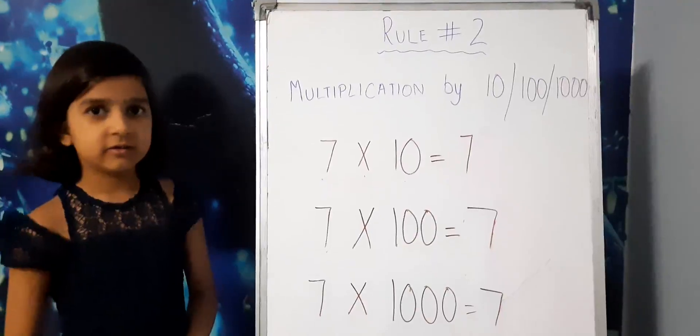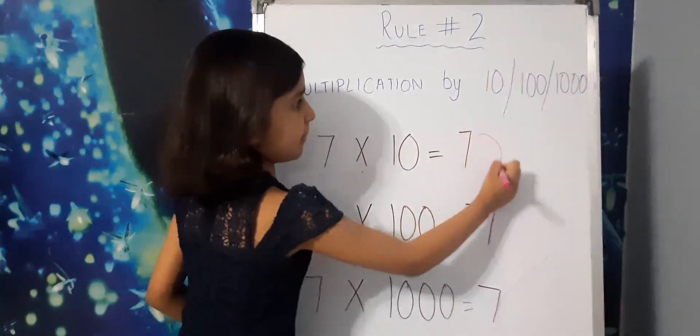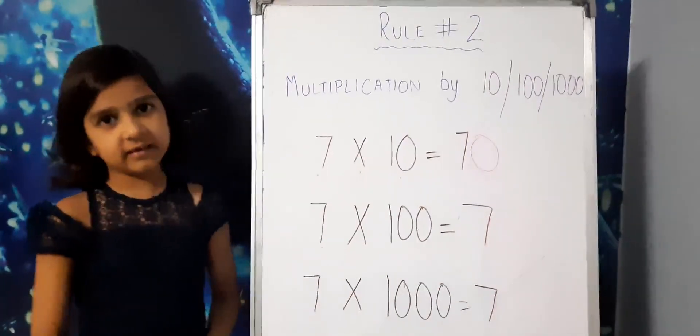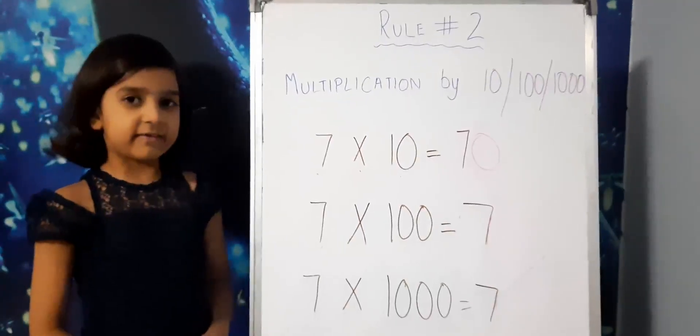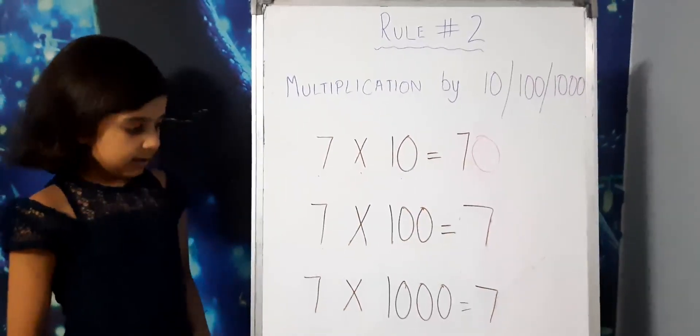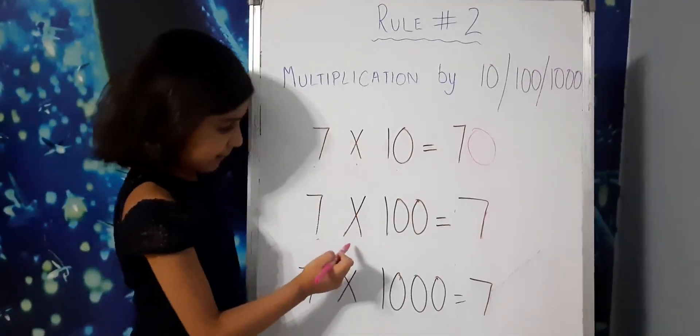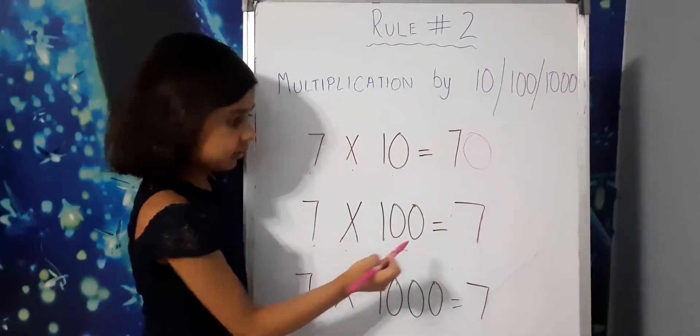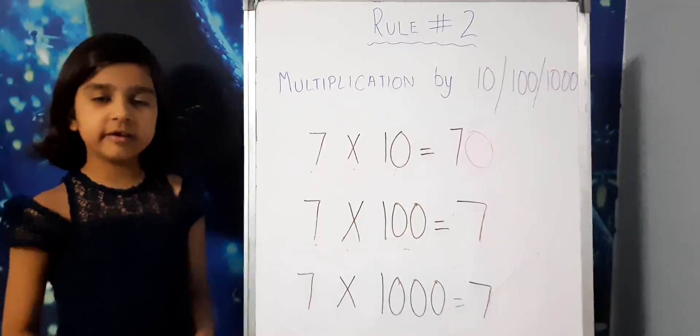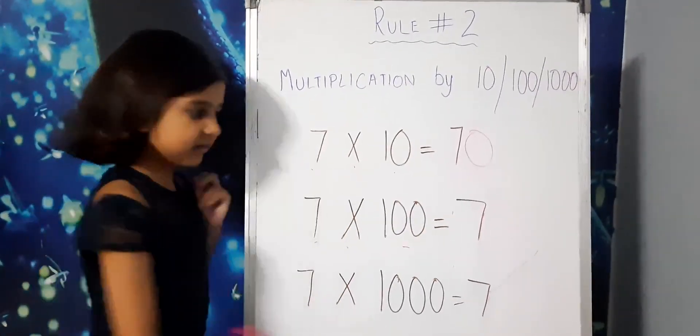The answer will be 70. Same way, if I multiply 7 by 100, the answer will be 7 followed by 2 zeros.